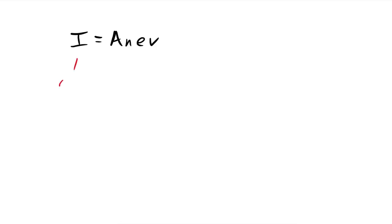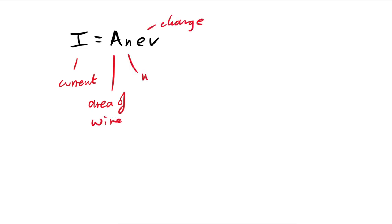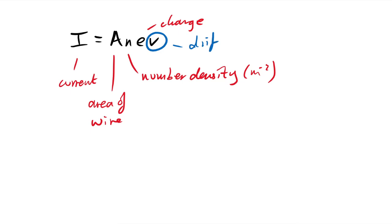An extra equation for OCR is the drift velocity equation: I = nAve (or nAeV), where I is current, A is the wire's cross-sectional area, e is the electron charge, n is the number density of electrons (per m³), and v is drift velocity — how fast the electrons actually move along the wire.